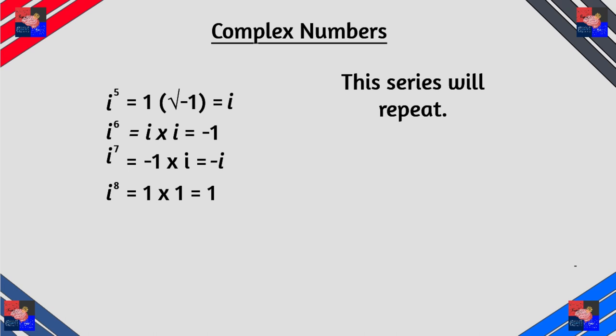So if you look at i to the fifth to i to the eighth if you do the arithmetic you get the same number. We can also find i in other numbers say square root of negative nine. Now if you break this down it's basically square root of nine times the square root of negative one which is three i.